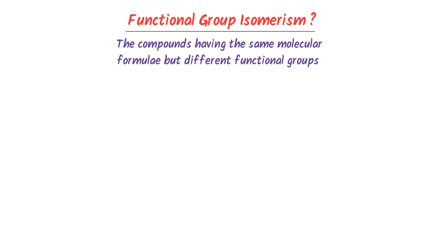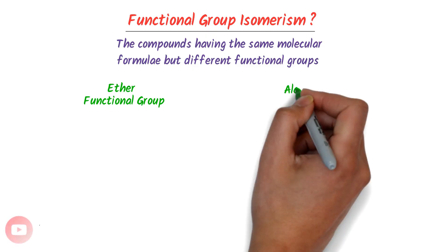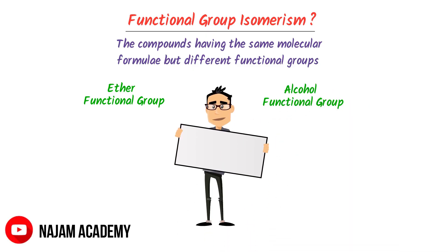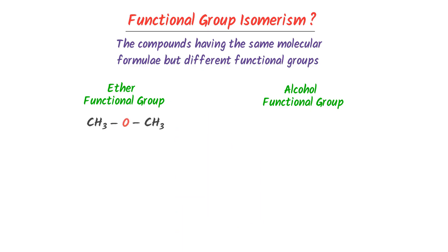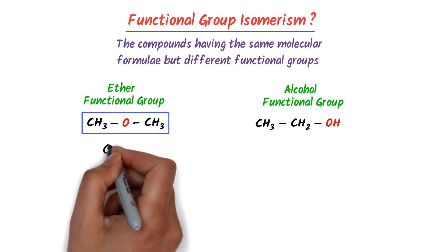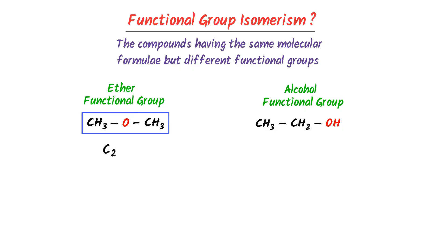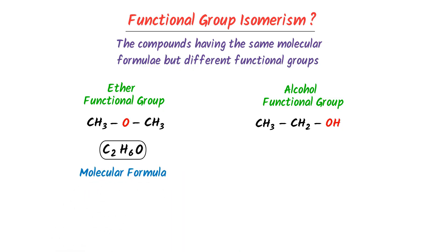For instance, consider the functional group of ether and the functional group of alcohol. Functional isomers exist between ether and alcohol. For example, consider this ether and this alcohol. In this ether molecule, there are two atoms of carbon, six atoms of hydrogen, and one atom of oxygen. So the molecular formula of this compound is C2H6O.